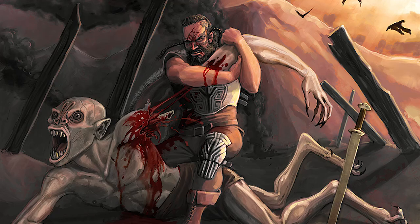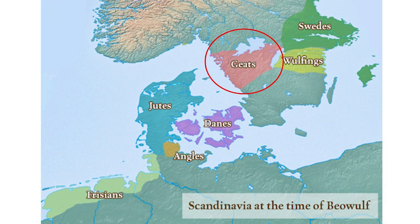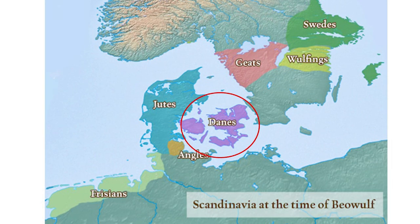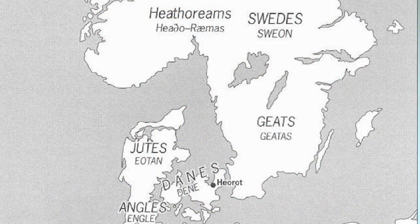So where does Beowulf take place? Most scholars think Beowulf is a fictional hero, not real, but he belonged to a very real people group known as the Gaets, who lived in what is today southern Sweden. Beowulf sails from the southern coast of Sweden down to Denmark, where he helps a Danish king whose people are being terrorized by a demonic monster named Grendel. The place in Denmark where Beowulf travels is known as Heorot, which would be pretty close to where Copenhagen is today.